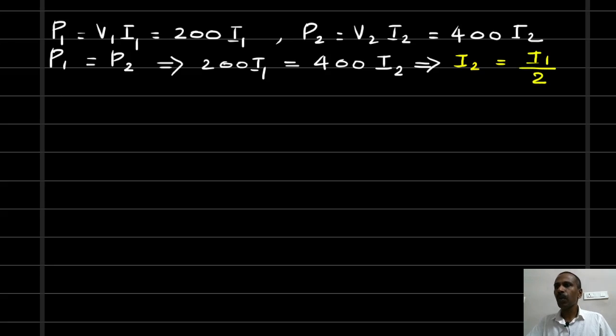Now, let's find out the power loss. W1 is equal to I1 square R1. It is a 2-wire DC system, so the loss is 2 into I1 square R1, and W2 is equal to 2 into I2 square R2.